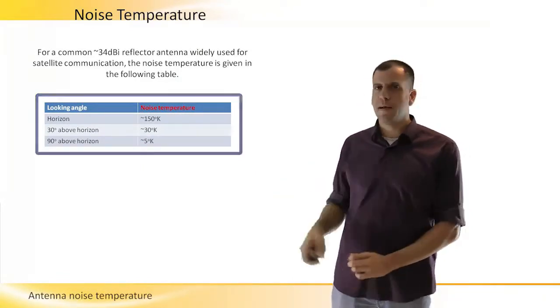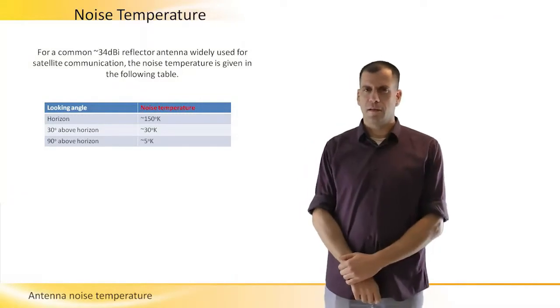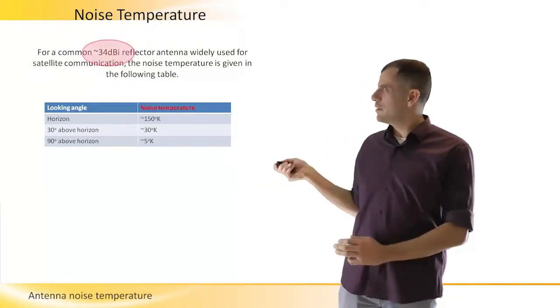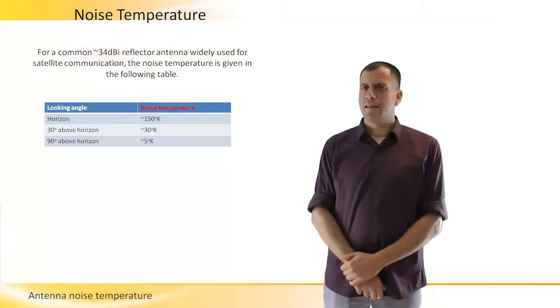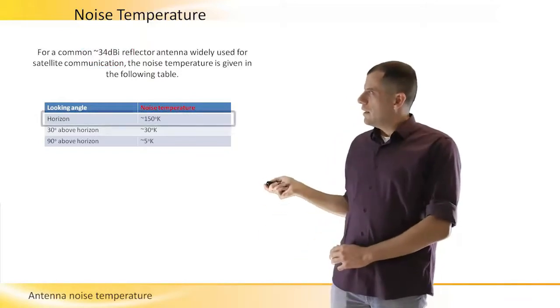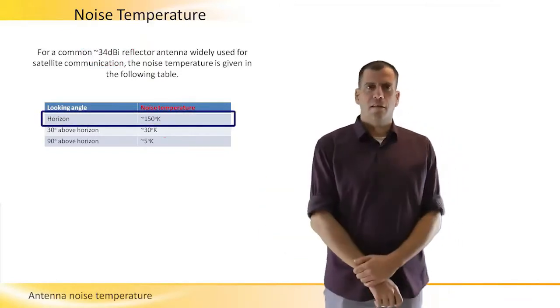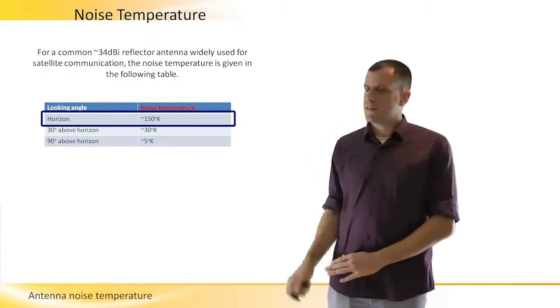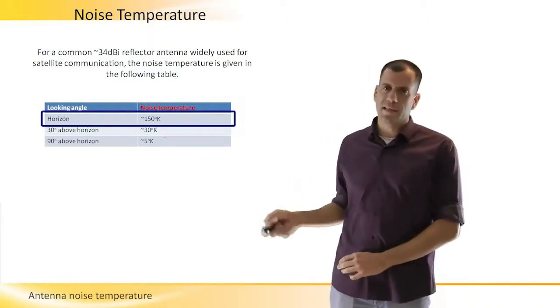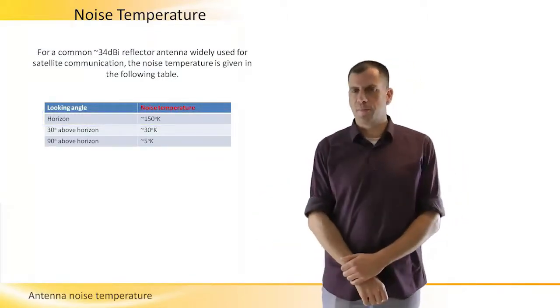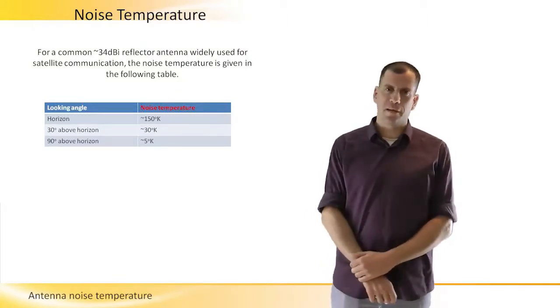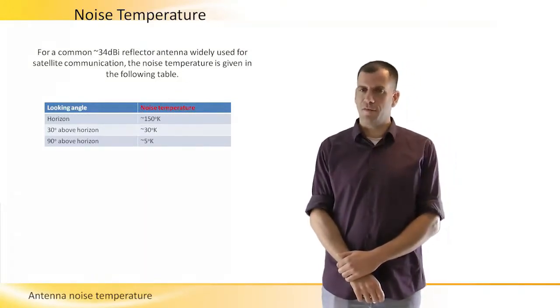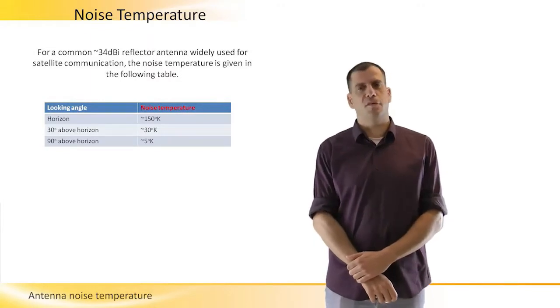If you have a 34 dBi antenna, approximately of a 34 dBi antenna, then if you look to the horizon, then you will see 150 degrees Kelvin. Of course, this doesn't depend on the gain of the antenna, because half of the radiation pattern is below ground and half of the radiation pattern is above ground.